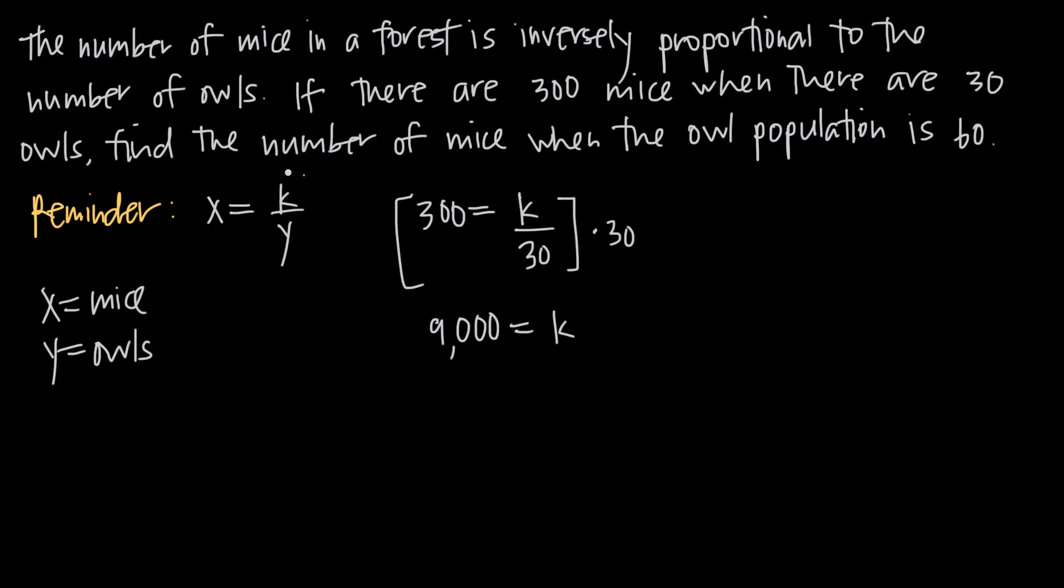So now with k equals 9,000 we've been asked to find the number of mice when the owl population is 60. We don't know the number of mice, we know that owls is going to be 60. So we're going to leave our x variable in the equation because that's the unknown variable we're solving for. So we're going to get x is equal to k, we know that k is 9,000 so 9,000 divided by y which is owls and we know that owls is 60.